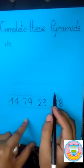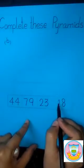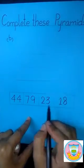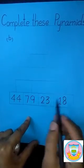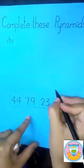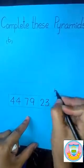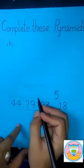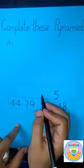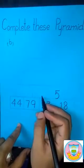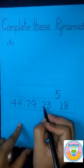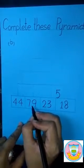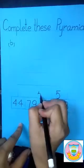How to solve the first box of this row? We subtract 23 by 18. When we subtract 23 by 18, we get the answer of 5. We write the answer in this box. Now let's solve the 2nd box of this row. We subtract 79 by 23. When we subtract 79 by 23, we get the answer of 56.